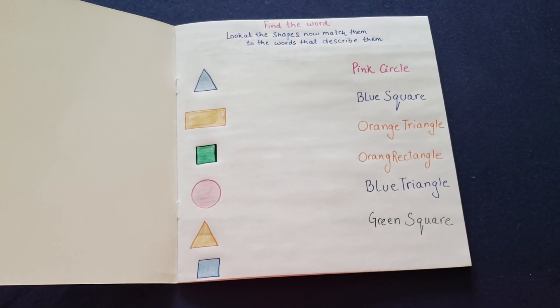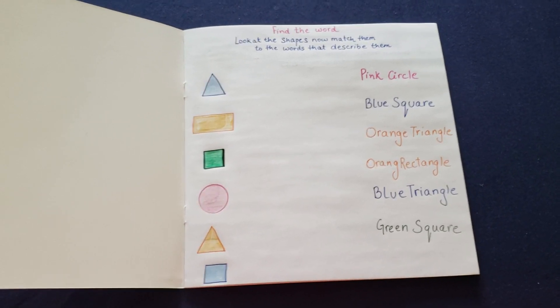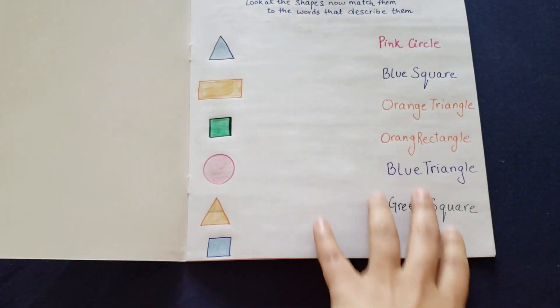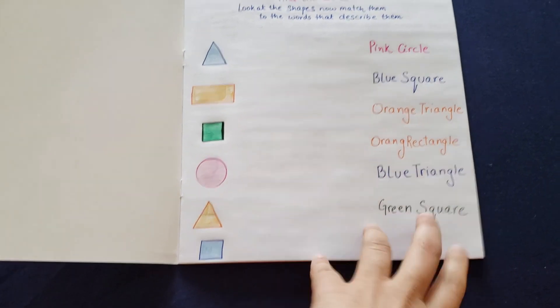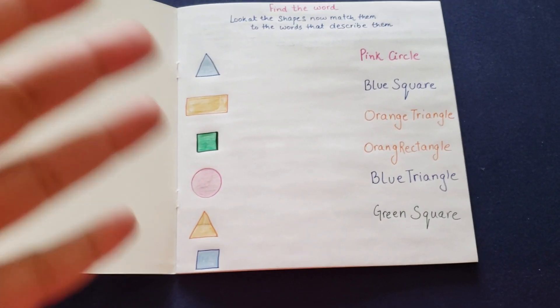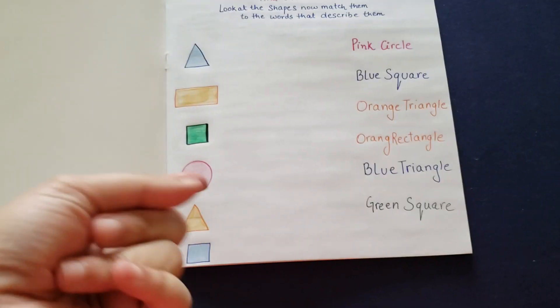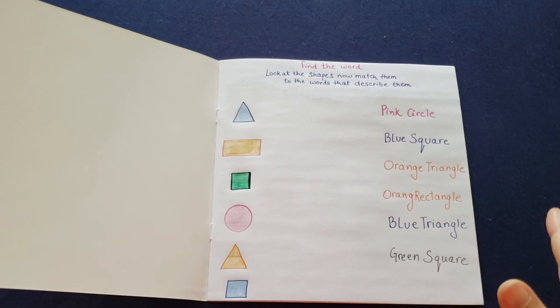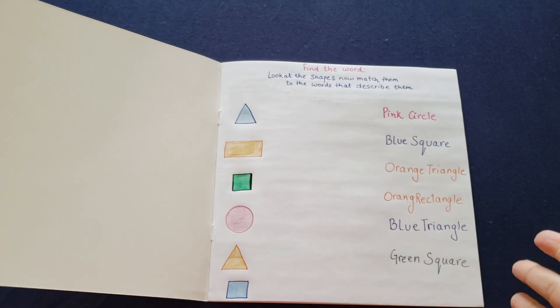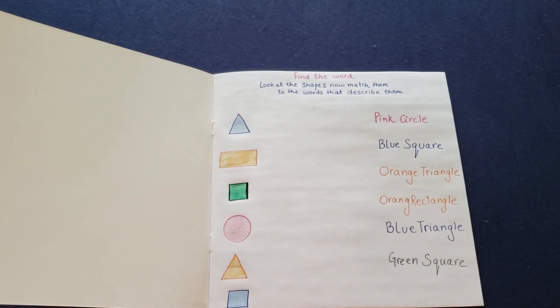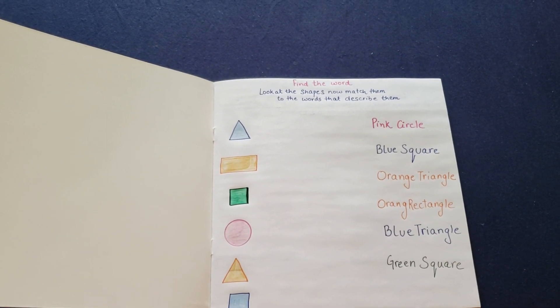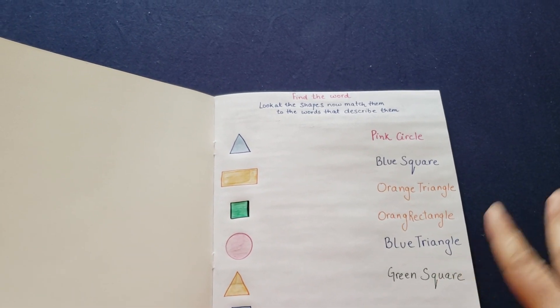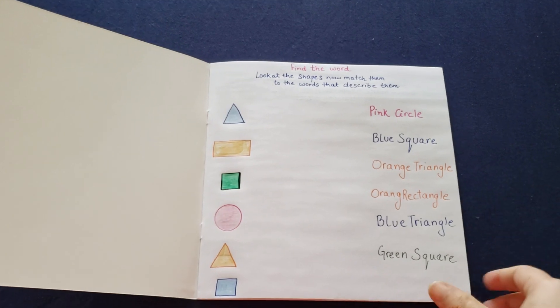So the first activity says find the word, look at the shapes now, match them with the words that describe them. You have the shapes and you have them written here in words. She needs to find the right one for the right shape and match it. She's in pre-K going to kindergarten, so this is like an LKG kid going to UKG, primarily for that.